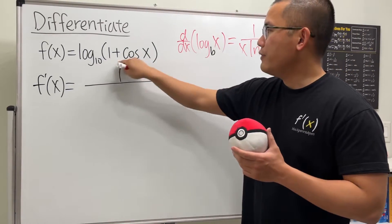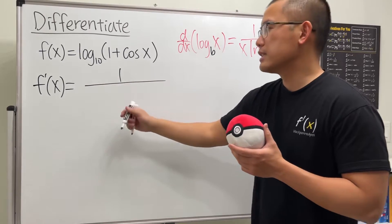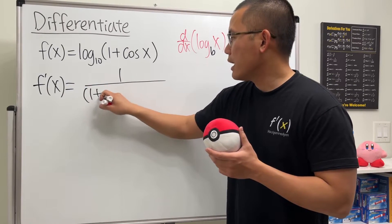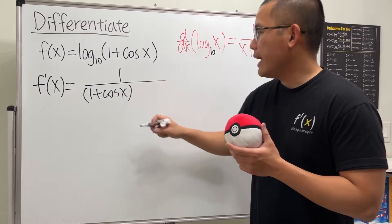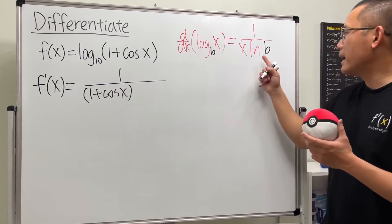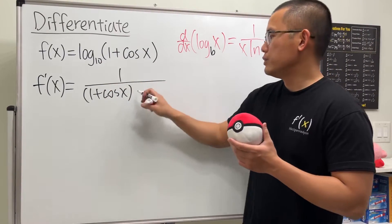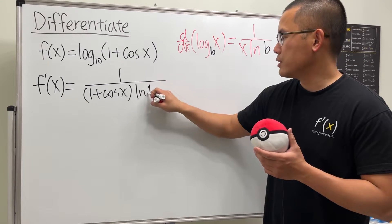Let's put down parentheses 1 plus cosine x, and we also have to multiply by ln of the base, which is ln 10. Let me just put it down.